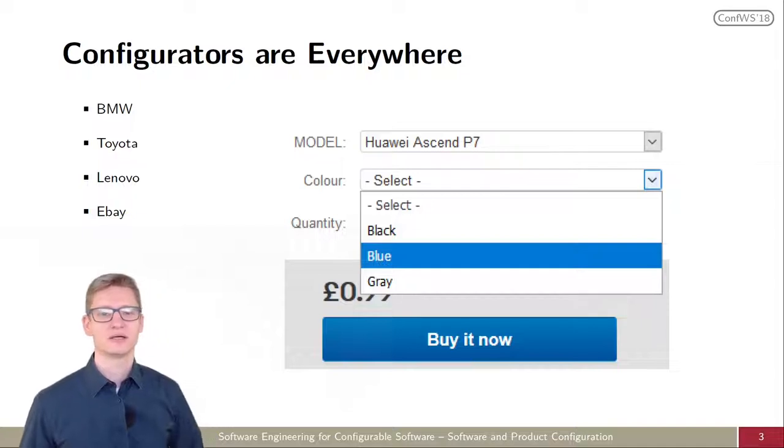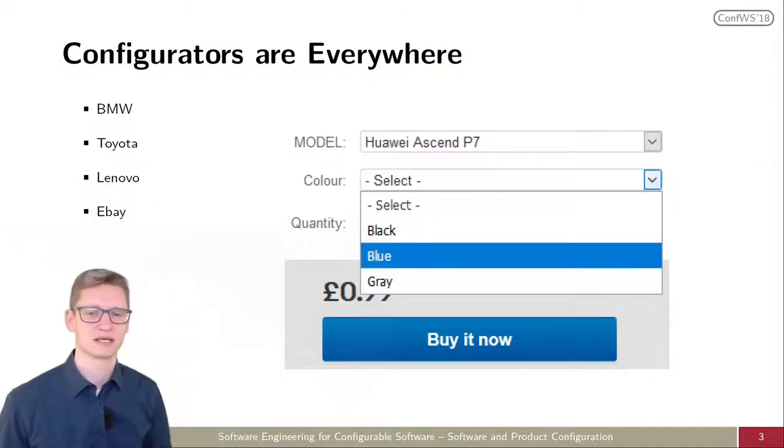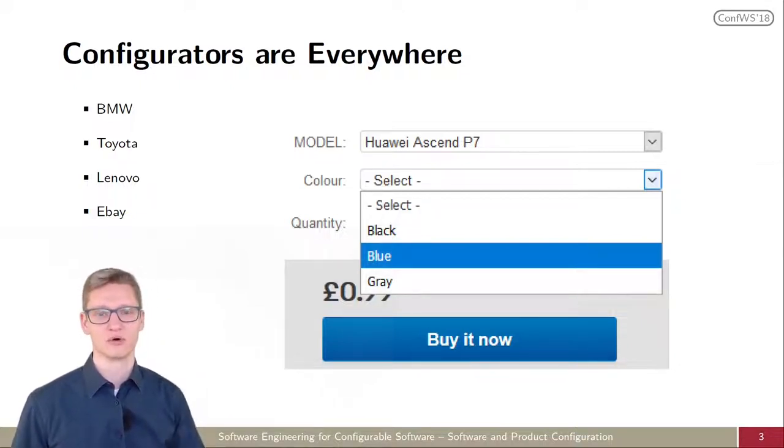When you go to eBay or Amazon, you can select something with different options. For your mobile phone, you can select a case and for the case you can select the color, but not all colors are available for all models.